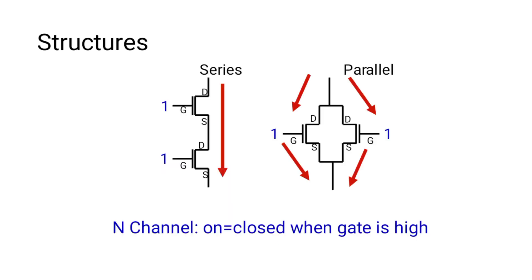For series and parallel structures in both NMOS and PMOS: when both transistors' source and drain are connected consecutively, that is series. When drain-to-drain and source-to-source are connected, that is parallel. In an N-channel transistor, when the gate is high (input is 1), the transistor is on — it is a closed switch — meaning current flows between drain and source.